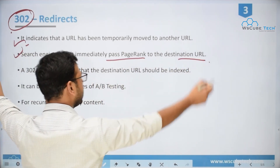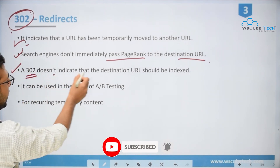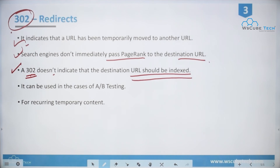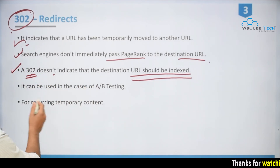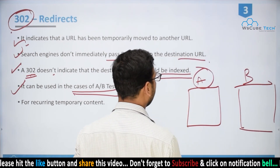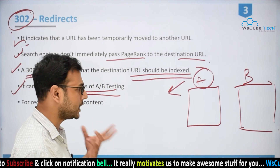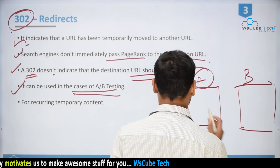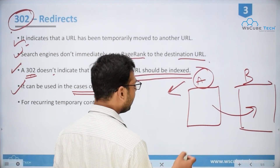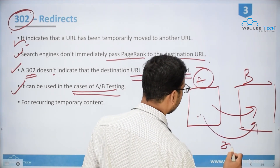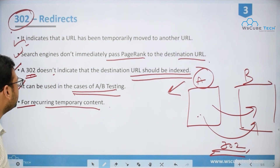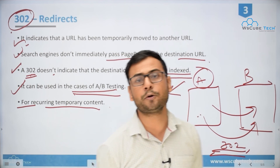Search engines don't immediately pass PageRank to the destination URL with a 302 — it doesn't indicate that the destination URL should be indexed, because it is a temporary shift. 302 can be used in A/B testing scenarios: if you have landing page A and landing page B, and you want to test different elements on a new landing page but are not sure whether you'll move there permanently, you apply 302 redirection to move users and crawlers temporarily. These are the conditions in which you would use 302 redirection.